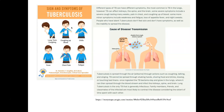What are some signs and symptoms of tuberculosis? There's long-term coughing, coughing up blood, chills, fever or night sweats, chest pain, and fatigue. Different types of TB can have different symptoms but the most common is TB in the lungs. TB can also affect the kidneys, the spine, and the brain.